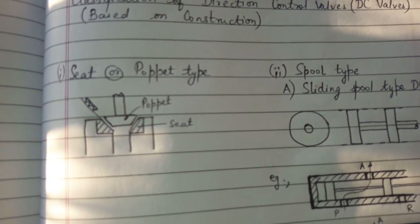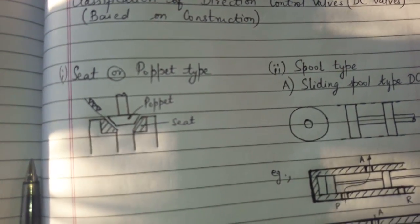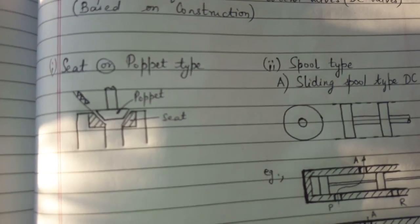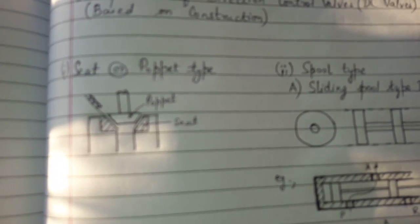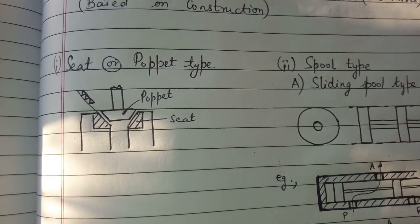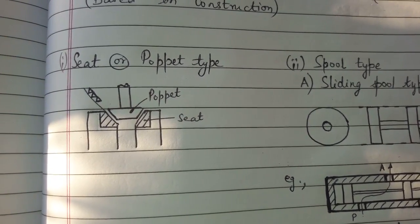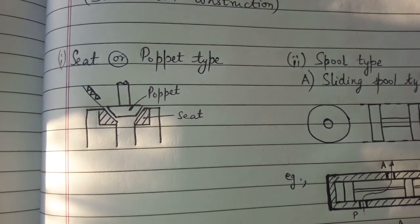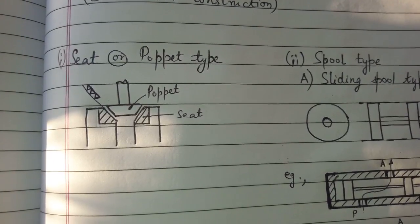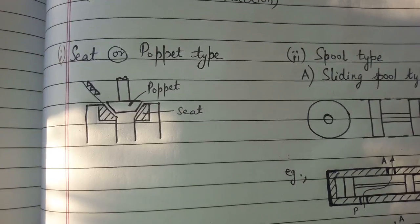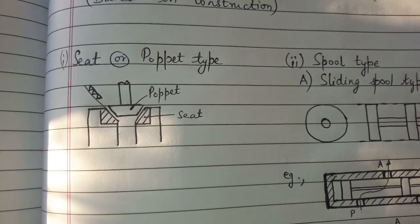The advantage of seat or puppet type are it is suitable for very high pressure application. It has very minor leakage. The disadvantages are seat or puppet type is not suitable for large valve sizes. Due to complicated constructions these valves are costly.